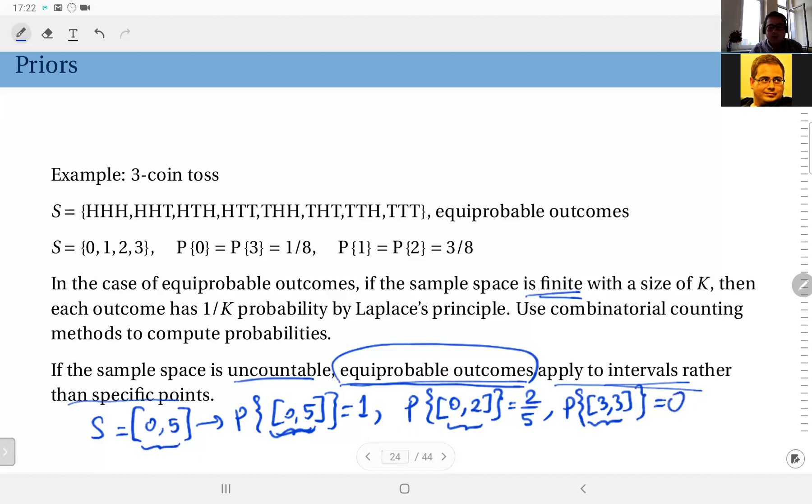So this is a counter-intuitive result, let's say, could be surprising to some of you. But if you have an uncountable, an uncountably infinite sample space, the probability of each specific outcome is 0. But of course, the probability of intervals such as these are not.